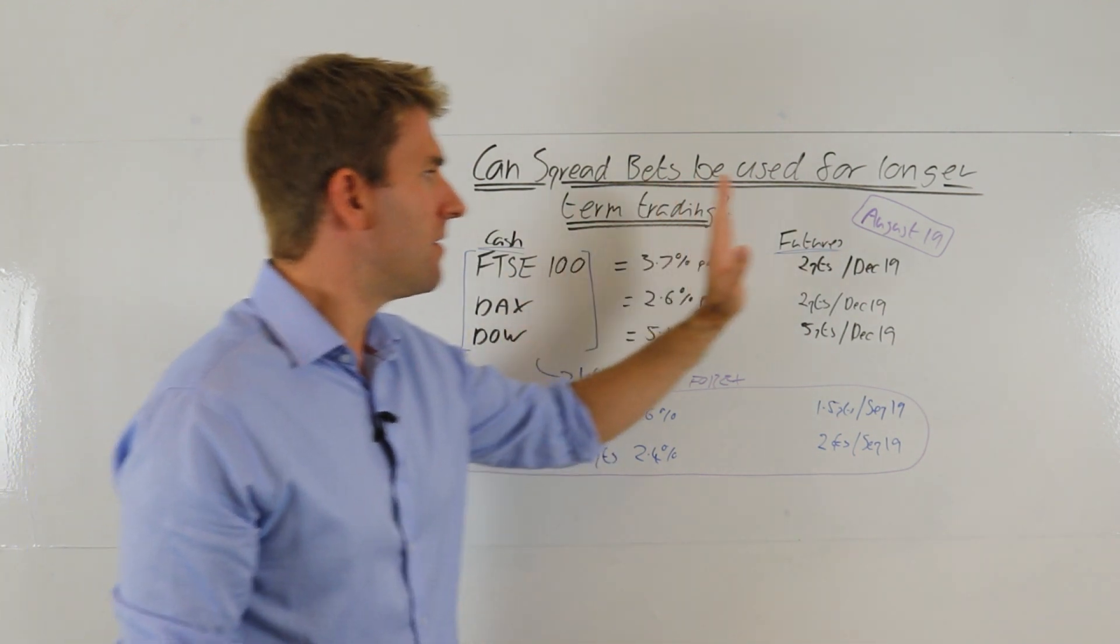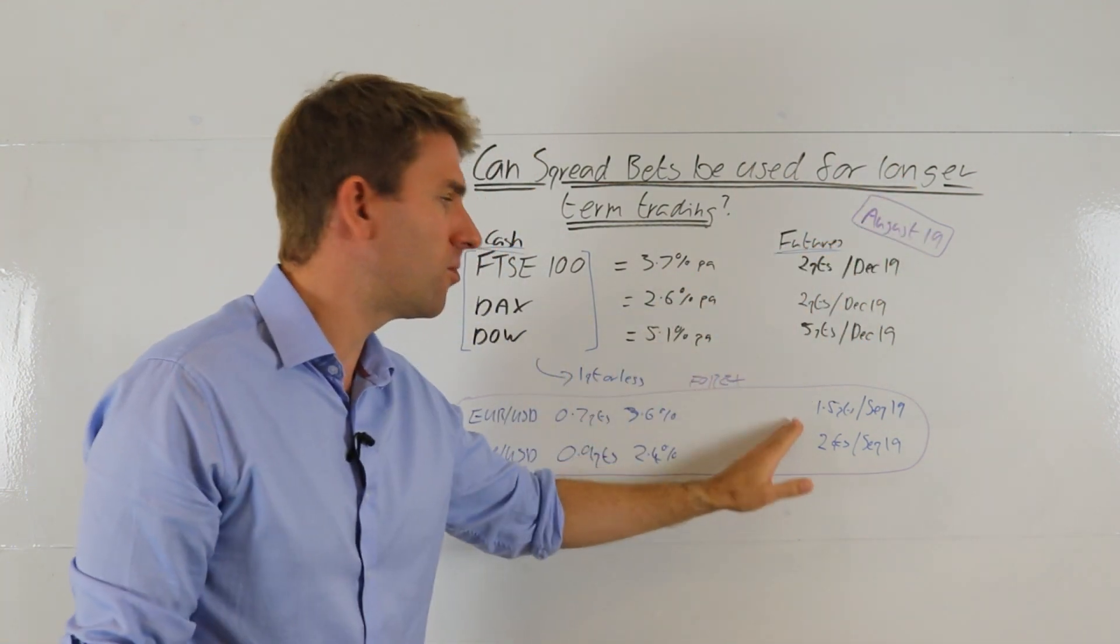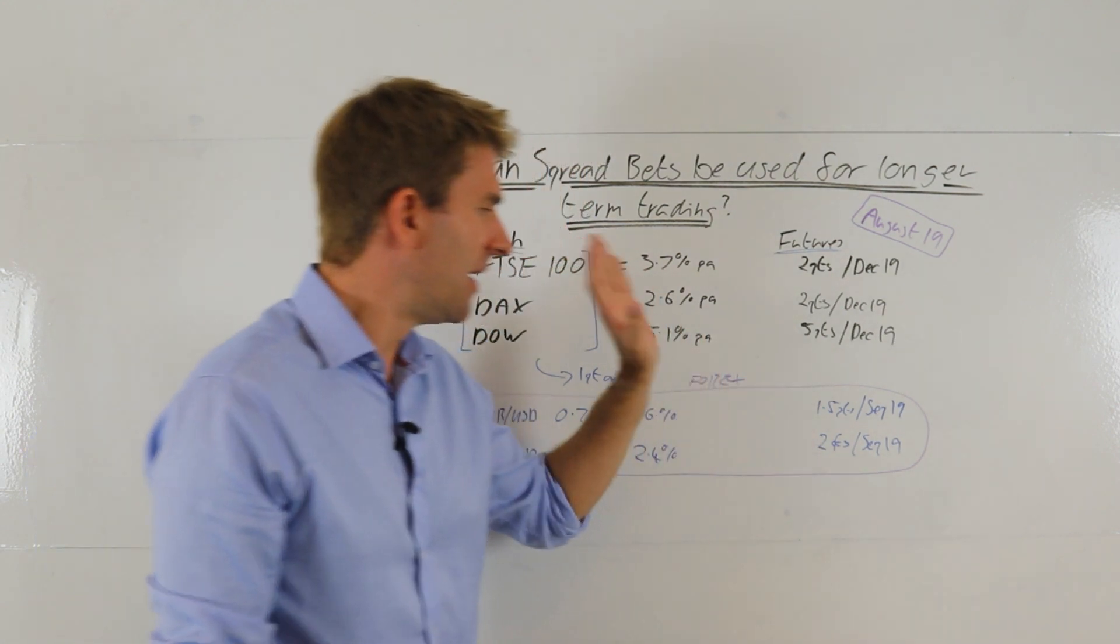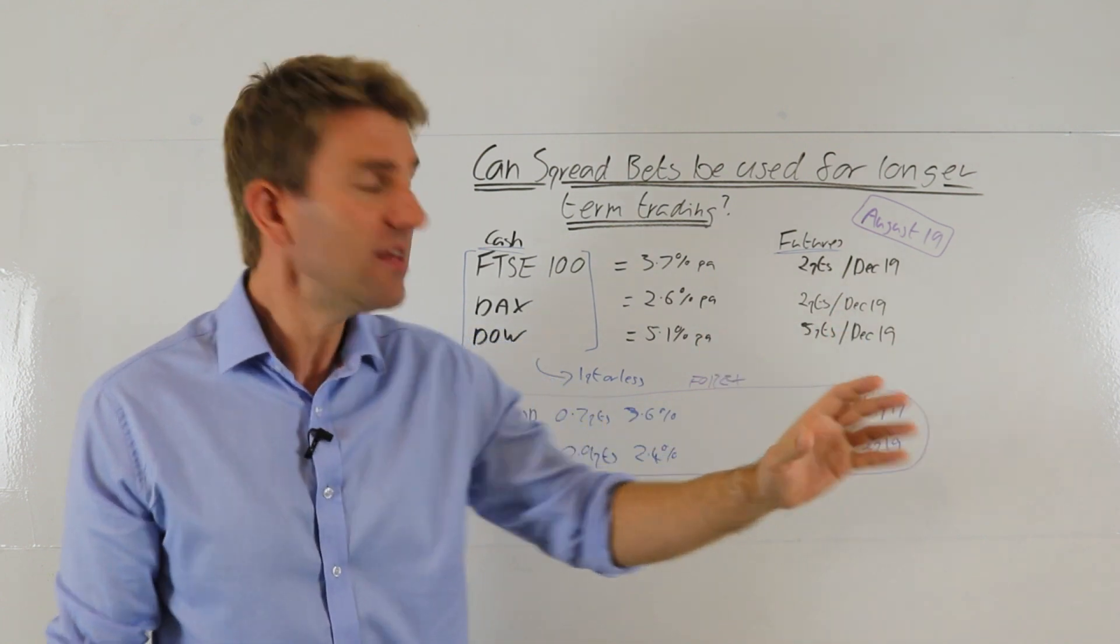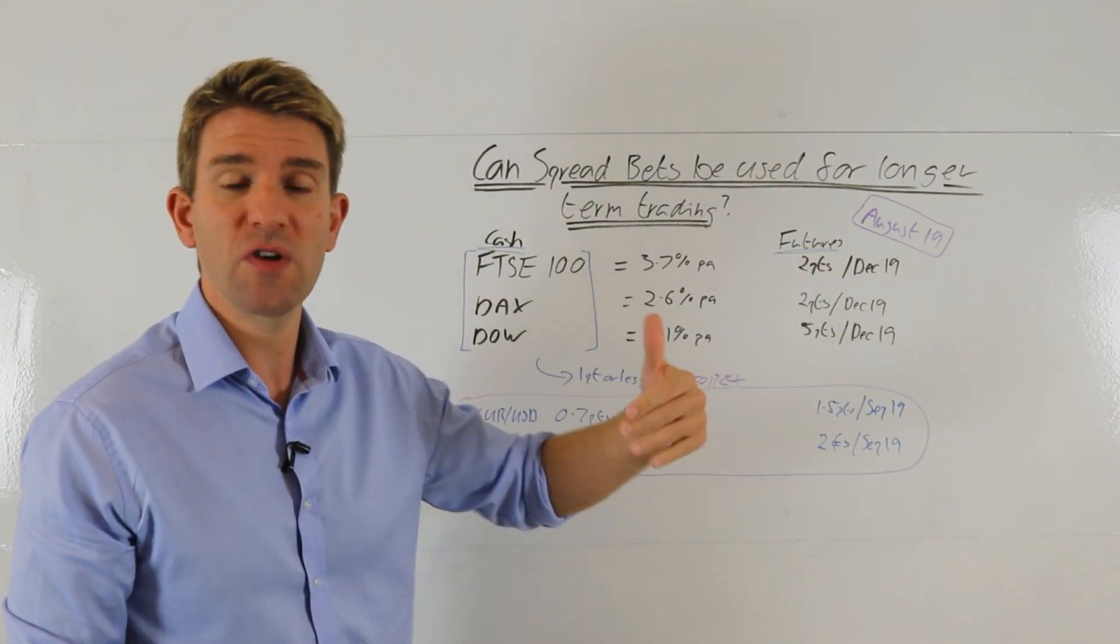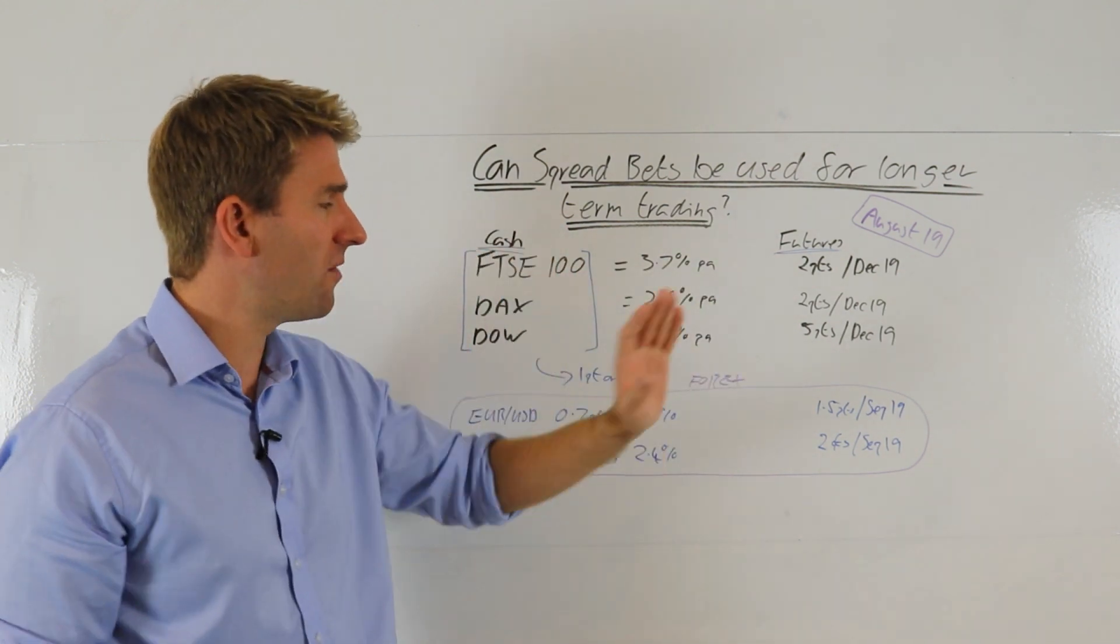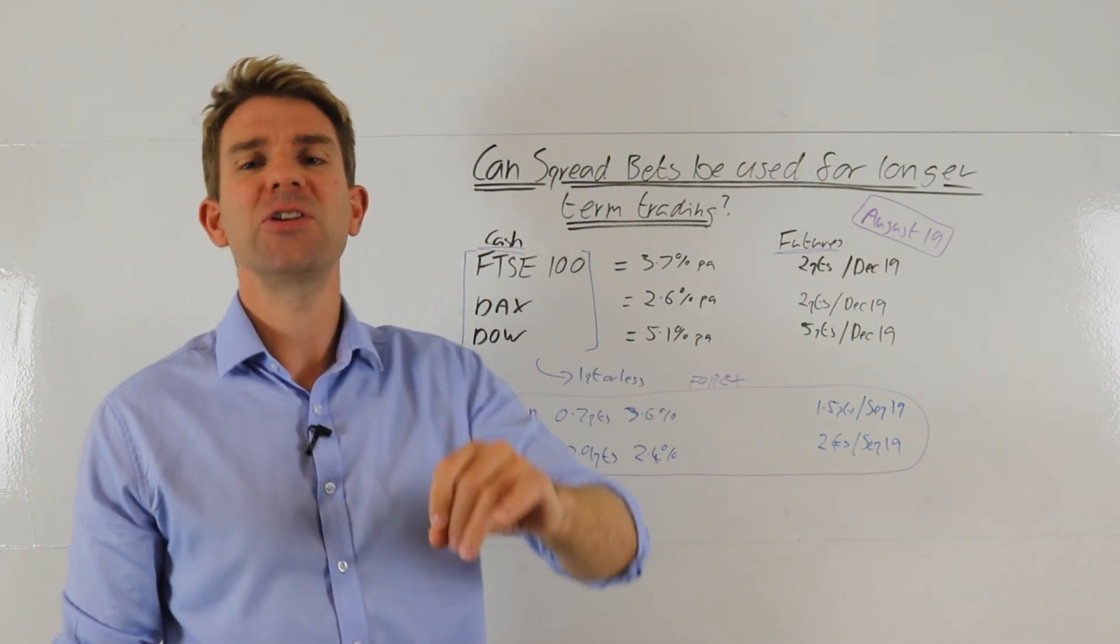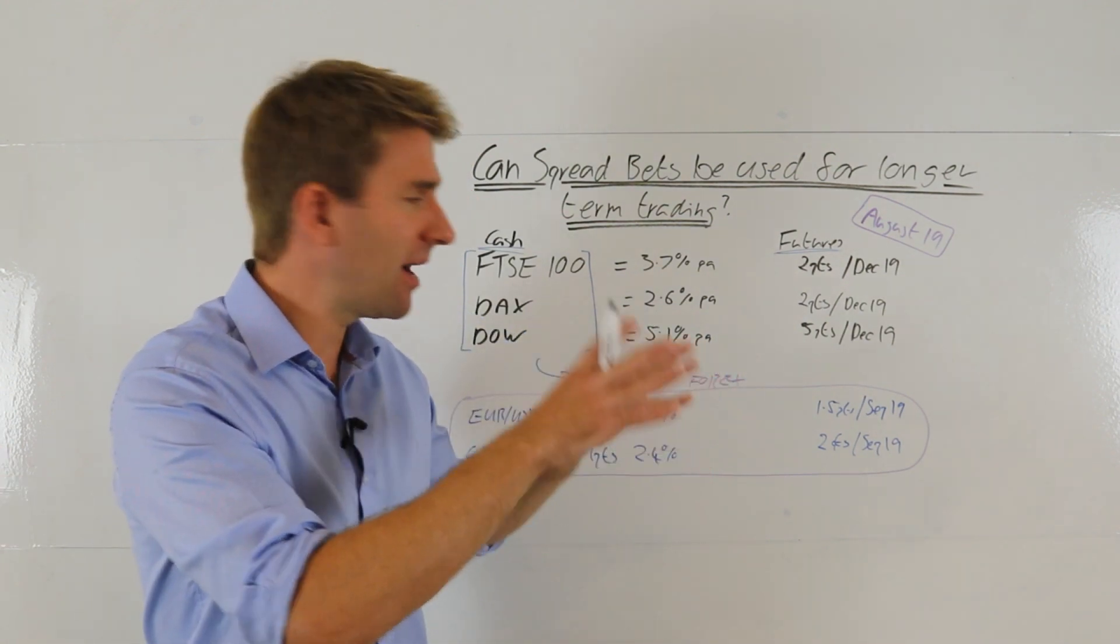But if you move to futures contracts, and by the way guys, they're called forwards as well, they might be called forwards, depending on which platform you're using, which broker you're using. Futures or forwards, these are basically far-dated expiries. So these will expire. Like the daily rolling cash doesn't expire, just rolls over every day until you close it, or you get stopped out, or you do something to take the position off. The futures or forward will expire on that date, unless you've got a little setting that says auto rollover. But assume you haven't, they will expire at that date.